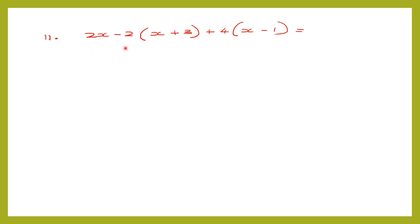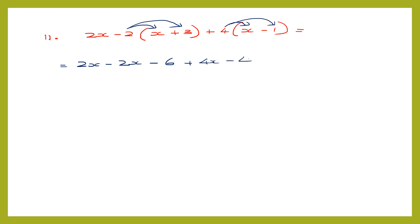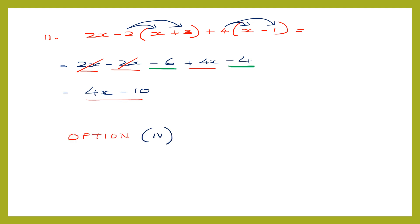Question 11. We have 2x minus 2 into x plus 3, plus 4 into 2x minus 1, and we expand all these. So 2x minus 2 into x: 2 into x is 2x, then minus 2 into plus 3 gives minus 6. Next, plus 4 into x is 4x, and 4 into minus 1 is minus 4. Collecting like terms: 2x minus 2x cancels, leaving 4x. For constants: minus 6 minus 4 is minus 10. So the answer is 4x minus 10, which is option 4.